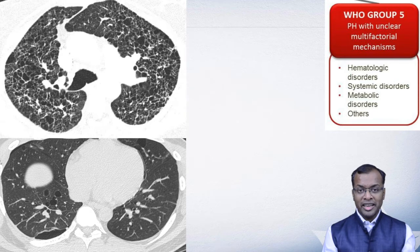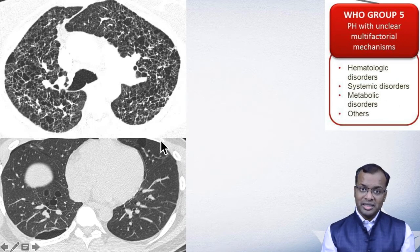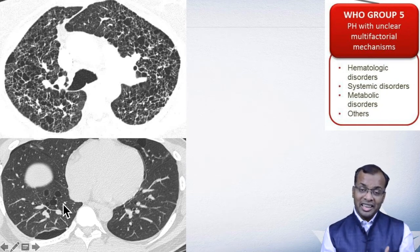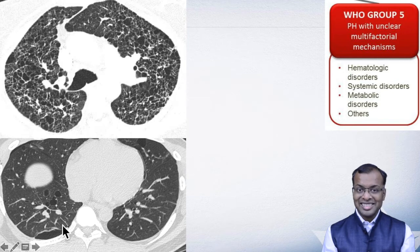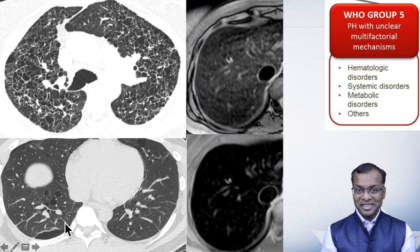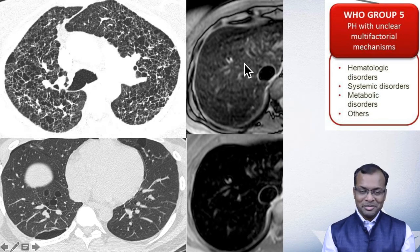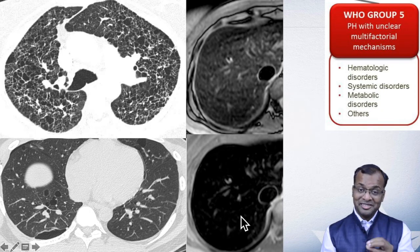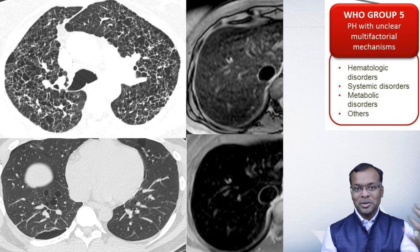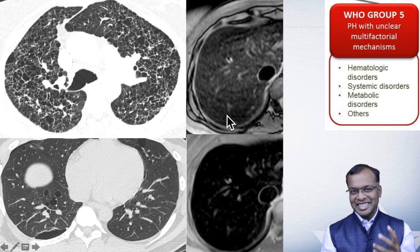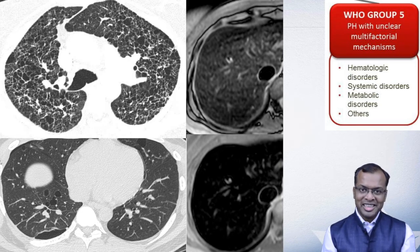Group 5 involves multifactorial conditions including systemic and hematological disorders. We see patients with Langerhans cell histiocytosis and lymphangioleiomyomatosis, where lung cysts and pneumothorax contribute to pulmonary hypertension. One exception: MRI is used for a patient with excessive iron deposition in the liver — severe hepatic iron deposition can also account for pulmonary hypertension. CT is not well suited for iron estimation, but MRI is fantastic in that scenario.